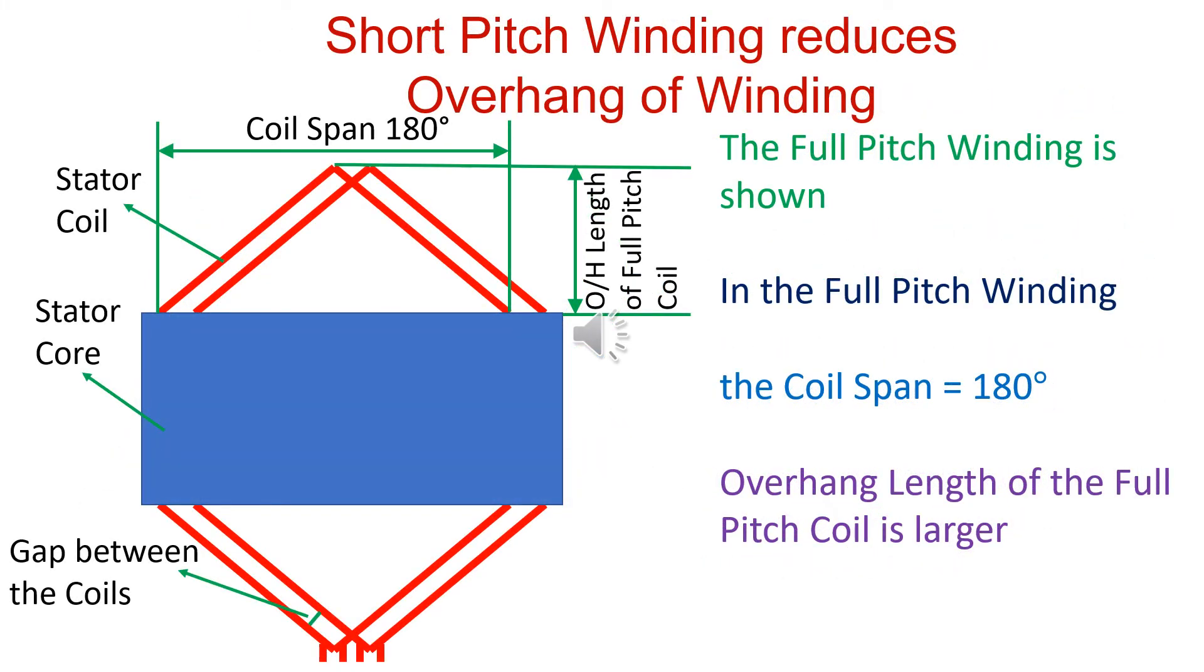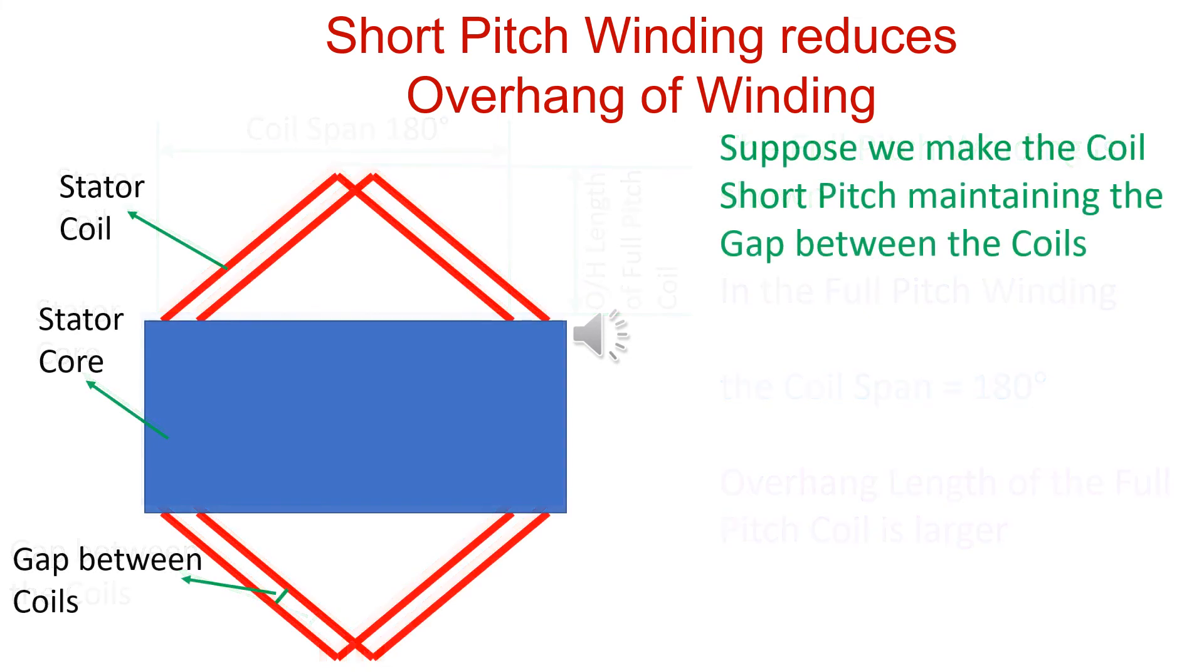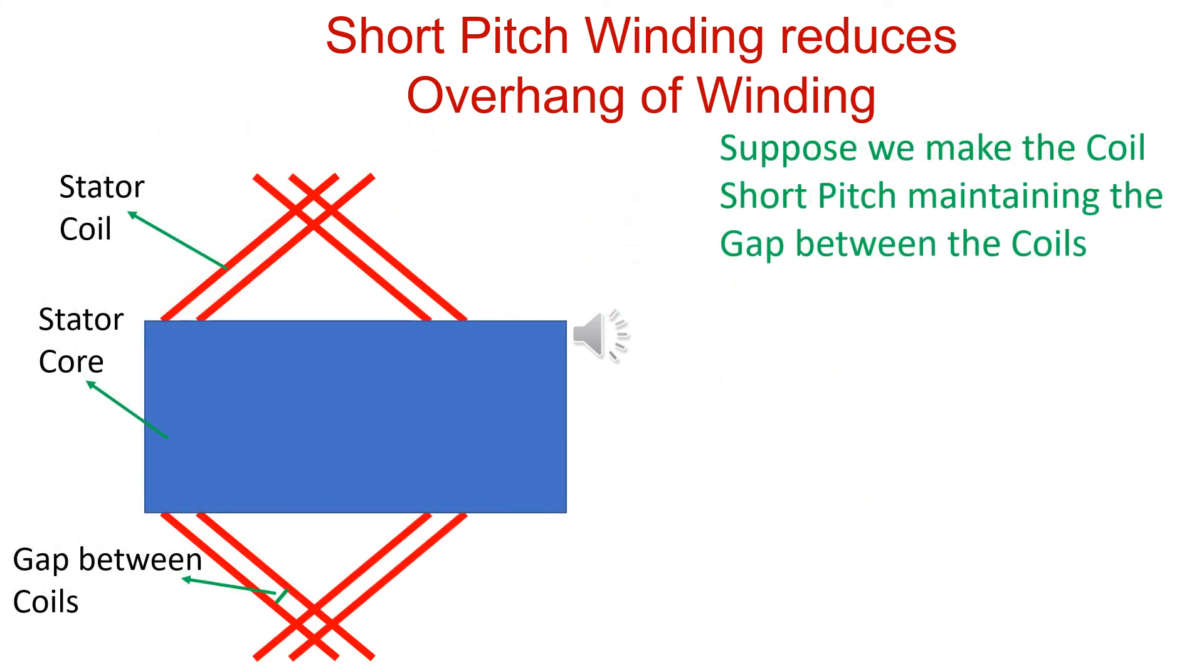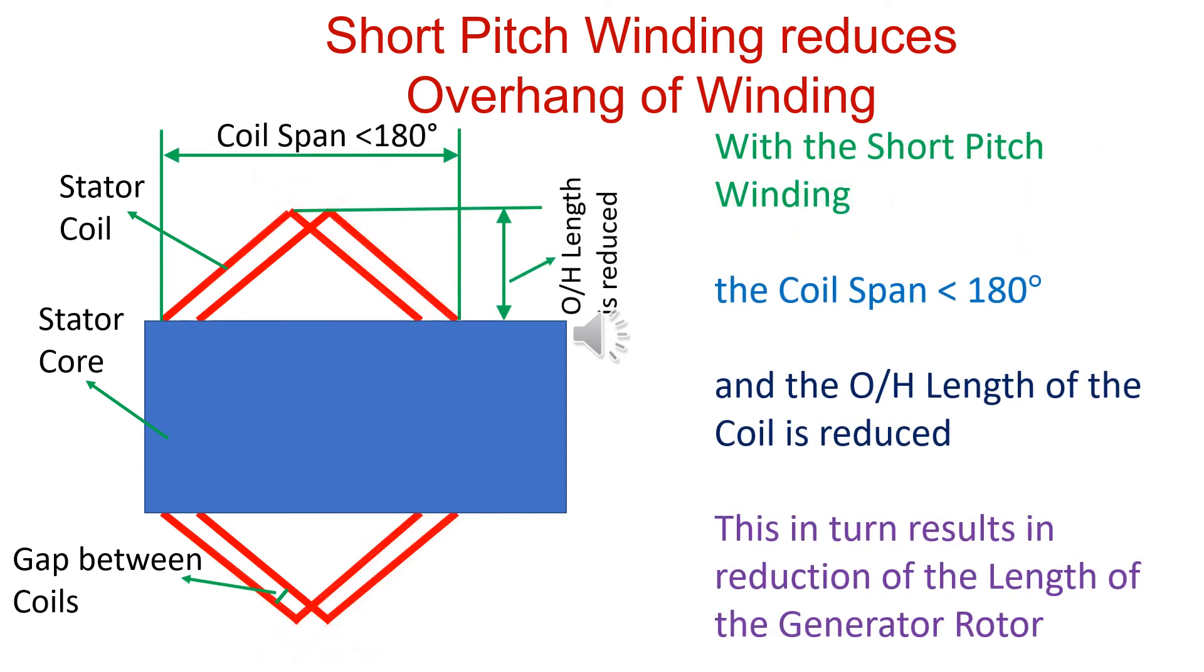The full pitch coil is shown. Overhang is larger. Coil pitch is less in short pitch, maintaining gap between the coils. Overhang length of the coil is reduced, resulting in reduced generator length.